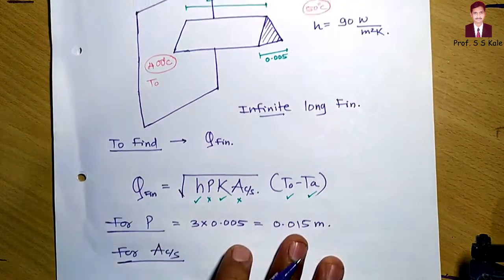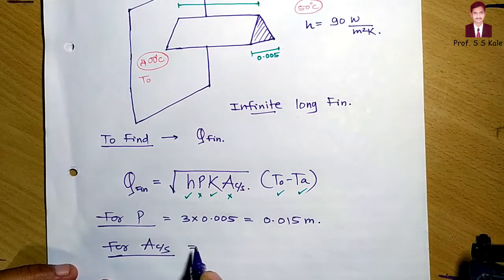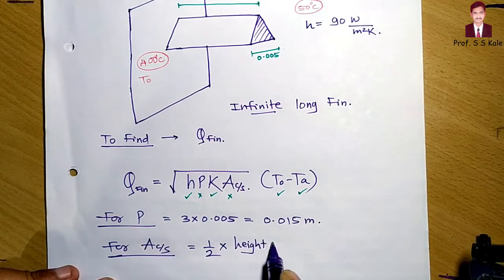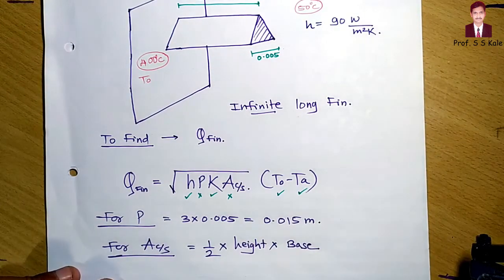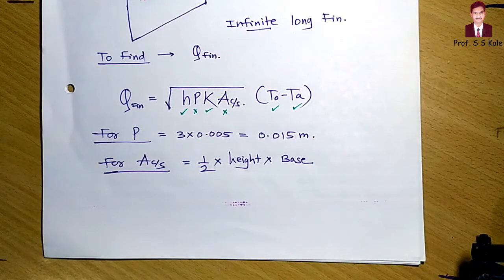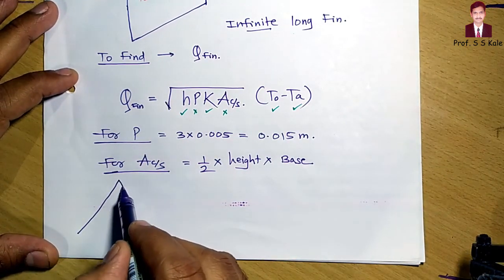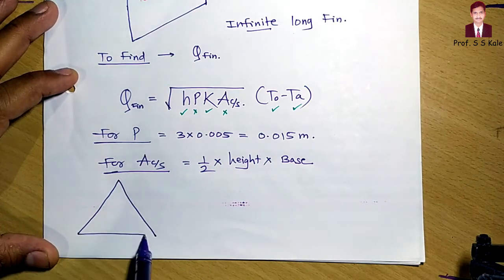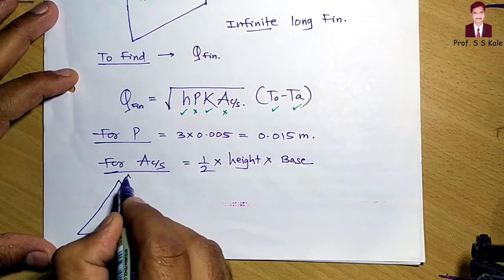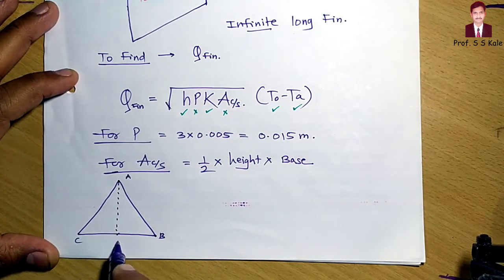For the cross-sectional area, the area of a triangle is one-half times height times base. Drawing the triangle with vertices A, B, C and a vertical line from A down to D on BC, the height is AD and the base is CB.